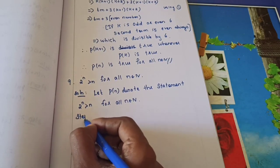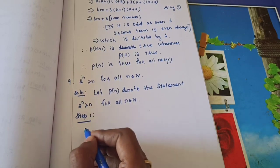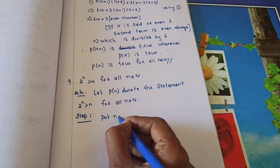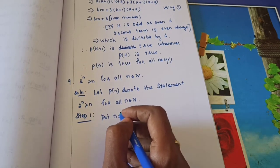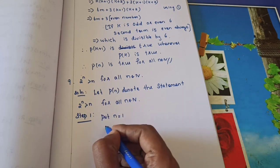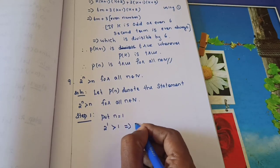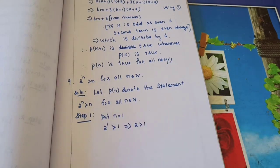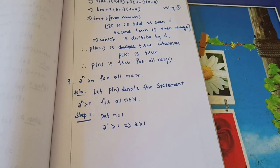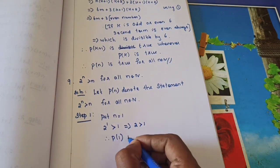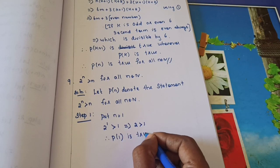Step 1: Put n equal to 1. Substituting: 2 power 1 equals 2. Whether 2 is greater than 1? Yes, 2 is greater than 1. Therefore p(1) is true.